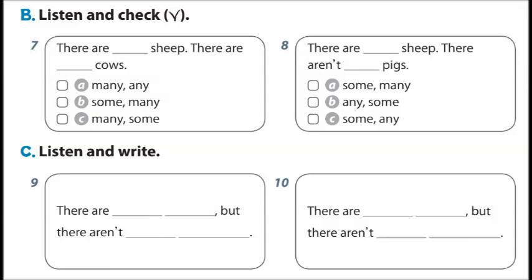9. There are some kittens, but there aren't any ducks. 10. There are many sheep, but there aren't any cows.